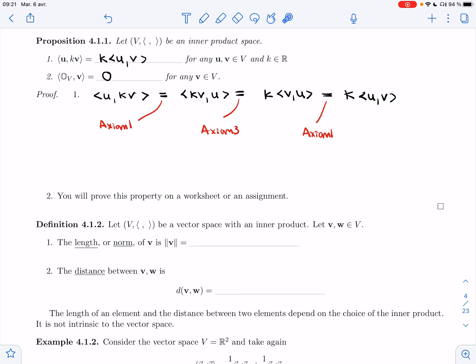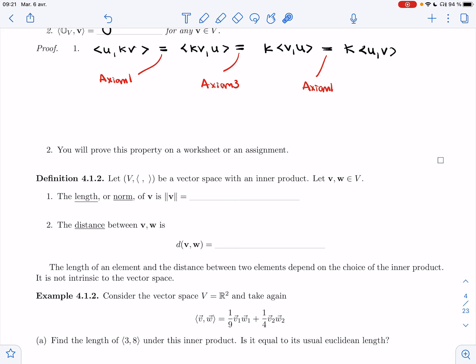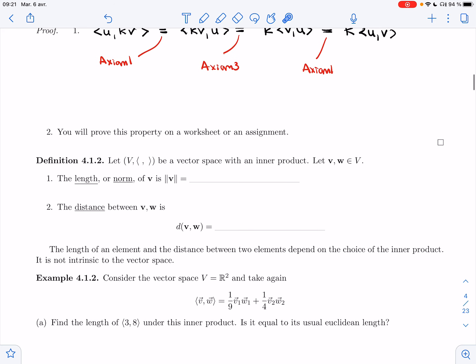The second property you'll prove on a worksheet or an assignment. Now that we have our generalized dot product data, we have our inner product on the vector space. We can start talking about length and distances. We'll talk about angles soon as well.